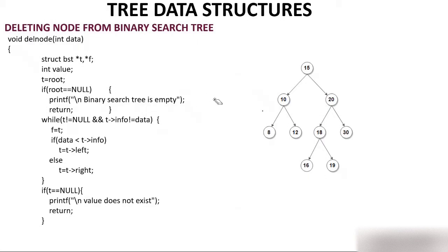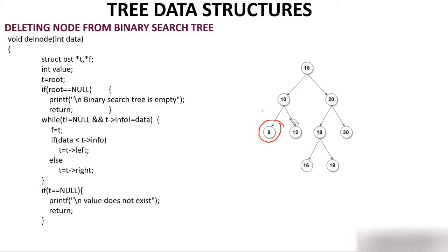The first condition is deleting a node having no child. For example, eight is a node having no child, and twelve is also a node having no child. I am considering node eight. The moment I delete eight, what will happen? Nothing will happen structurally in terms of restructuring.